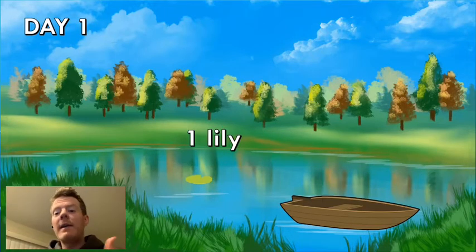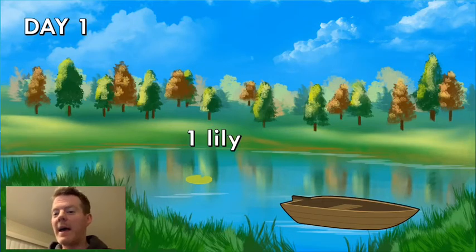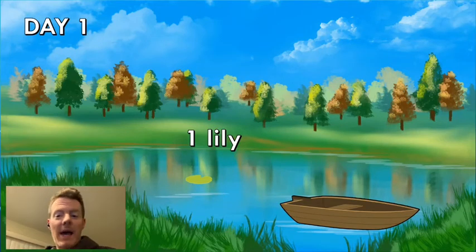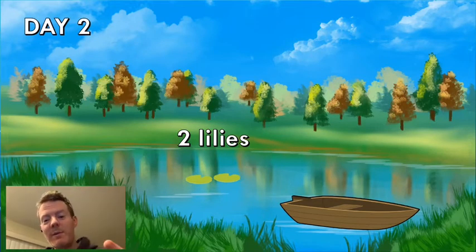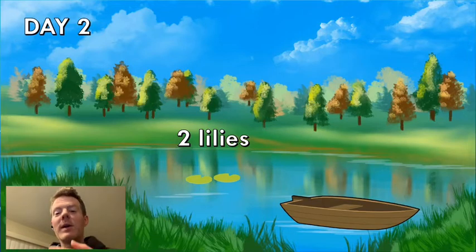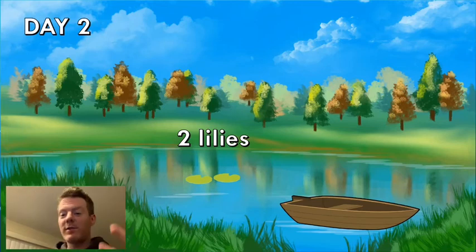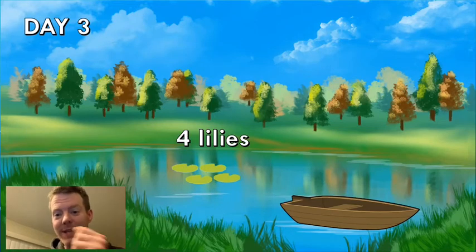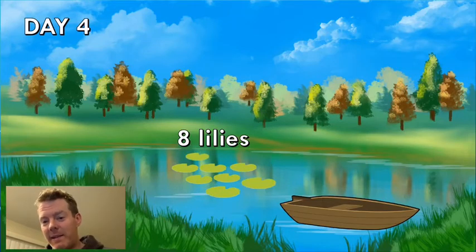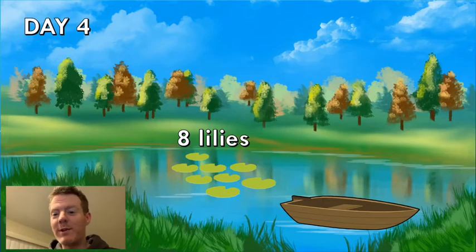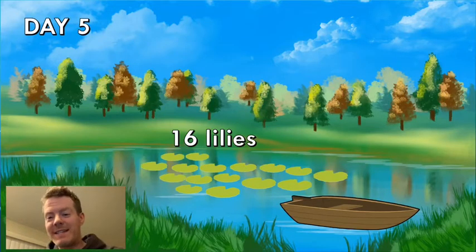So then one day — day one — a lily pad appears. A lily pad is the only lily pad in the pond and it takes 24 hours for the lily pad to reproduce. So on day two, 24 hours later, there's two lily pads. Now they're both reproducing, so on the third day there's four lily pads because they've both produced an extra lily pad. Then all four of those reproduce, so on the next day there's eight lily pads.